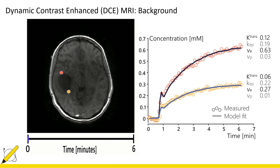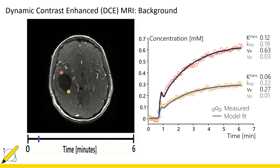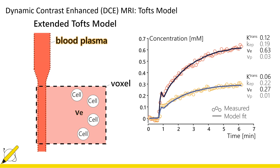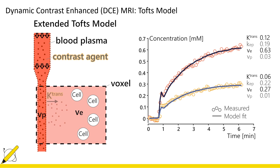The model in this case was the extended TOFTS model. It says that suppose there is a voxel with some cells — the space between the cells is described by VE, and if there is a blood vessel passing through the voxel then the volume occupied by the blood plasma is VP. The contrast agent or tracer is in the blood vessel, so the rate at which it leaks out is described by K-trans, while the reverse process is described by K-ep.